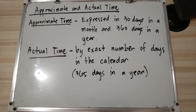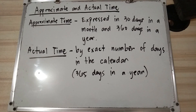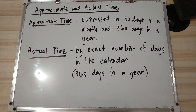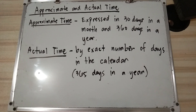Hi guys, this is Nelmar James Gado and for today's video let's talk about approximate and actual time. Approximate time is expressed in 30 days in a month and 360 days in a year, while actual time uses the exact number of days in the calendar — 365 days in a year. So with approximate time, we just estimate 30 days per month, even for February or months with 31 days, and 360 days in a year (30 times 12). For actual time, we use the actual number of days — whether 31, 30, or 28 days for February.